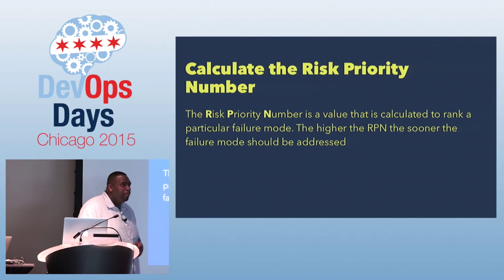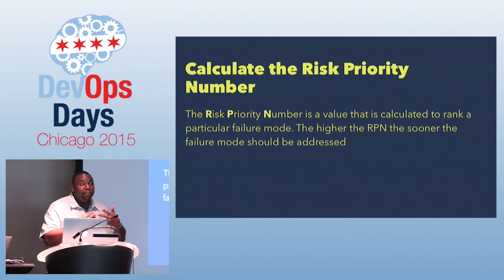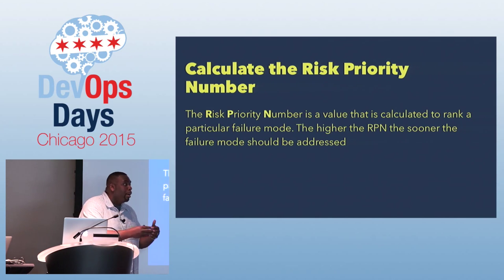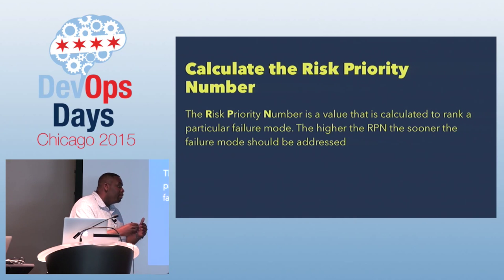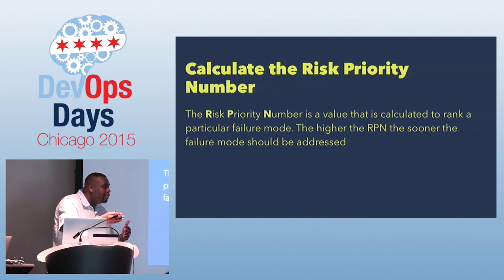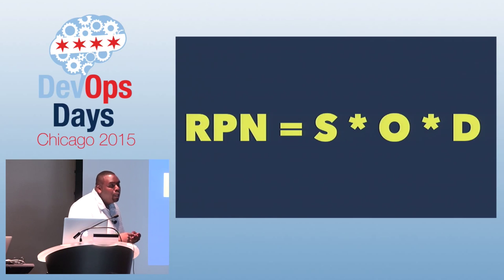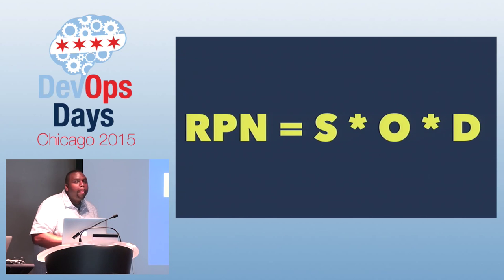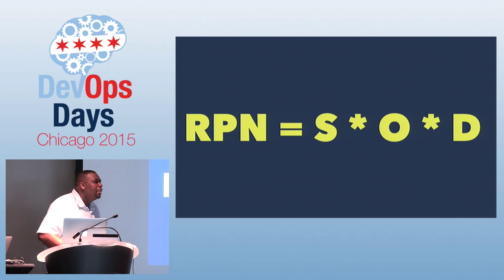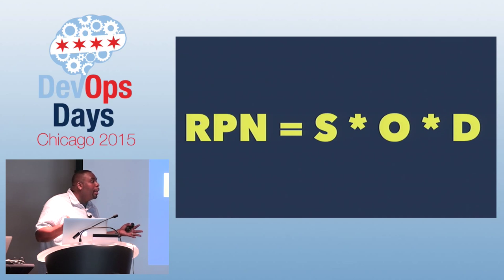From there, we calculate the Risk Priority Number. The RPN is this value that we assign to a risk so that we know where it falls in the sea of other risks. The moonwalking guy — yeah, we should address that, but probably not before a database failure. We take the severity, the occurrence ranking, and the detection ranking, multiply them together, and that gives you the RPN. When you go through this process, there are going to be things that just shoot up to the top. It's so enlightening to see very clearly what we need to work on.